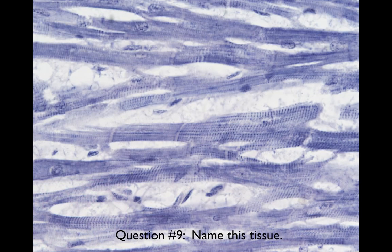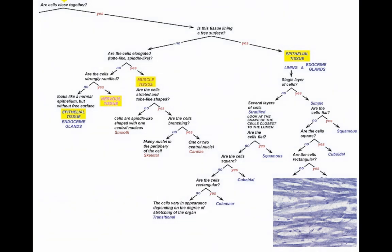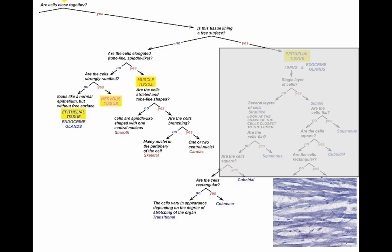Finally, last but not least, name this tissue. Let's go through the tree. The cells are close together, but there is no free edge. So that first question is a no. Are they elongated, tube-like, and spindle-like? Most definitely. Are they striated? Most definitely. And are they branching? And in this case, unlike the skeletal muscle we saw before, yes, they are. This is cardiac muscle. Something that might help you to remember if you look at this tissue, especially if you look at it a little bit larger, you'll notice that there are very fine kind of zipper-like structures that go through it. And those are called intercalated discs. And when you see those, you know you're looking at cardiac muscle and not skeletal muscle.